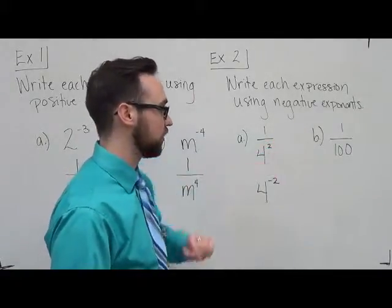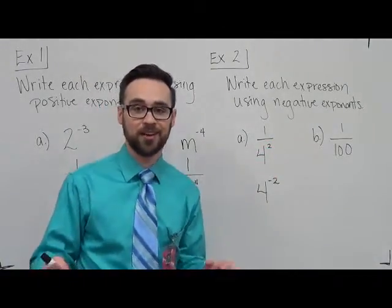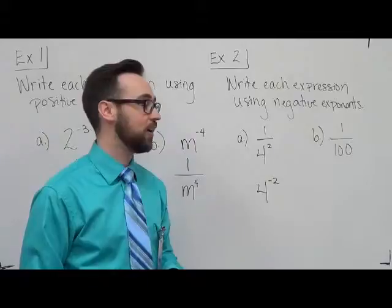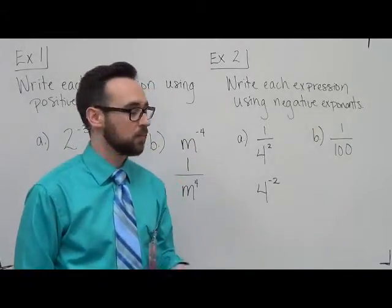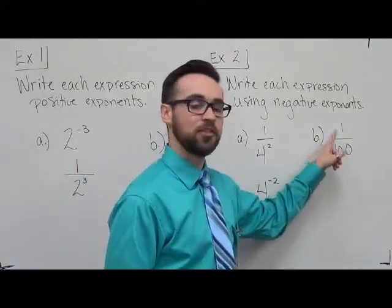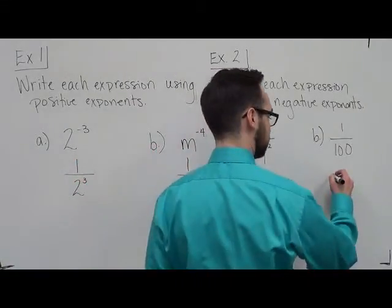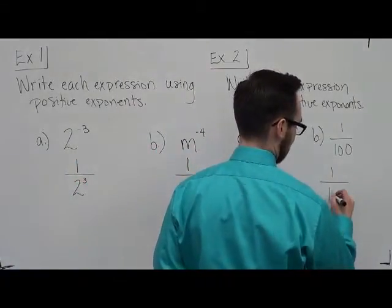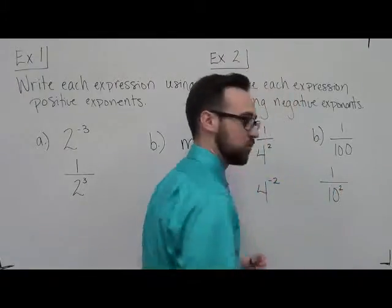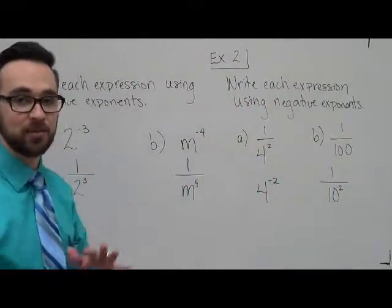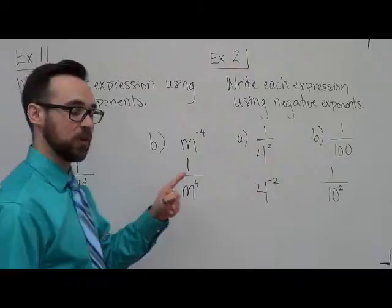Here, what we want to do is we first have to start by writing it as something using exponents, right? Right now it's not using any exponents. So how can I rewrite 100 so that it uses an exponent? Well, we can rewrite that as 1 over 10 squared, right? We have 10 times 10 is 100.